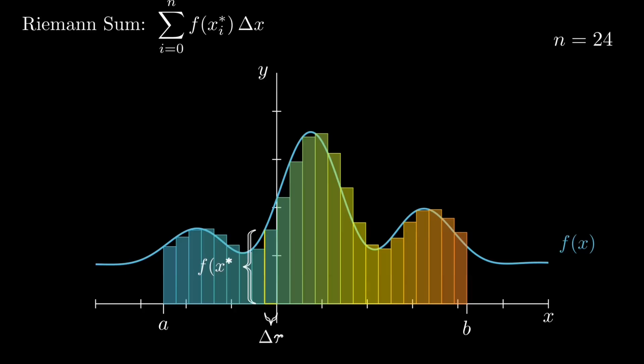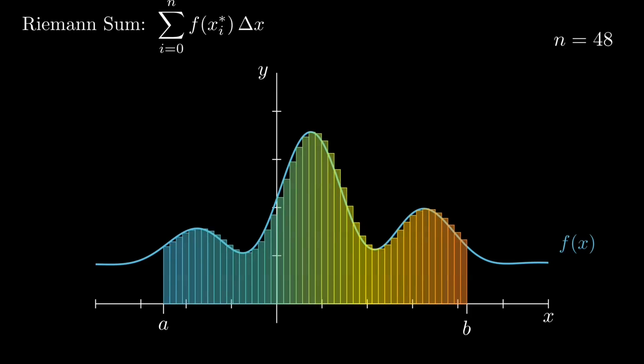and form a rectangle whose height is the value of f and whose width is delta x. Adding up the areas of all these rectangles gives us an approximation to the total area under the curve.